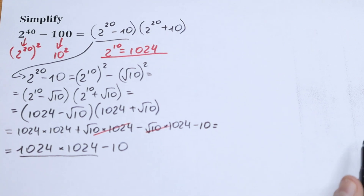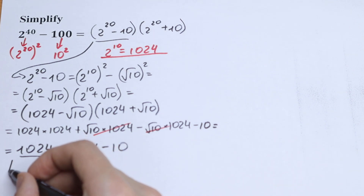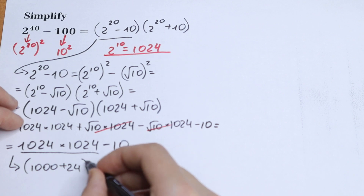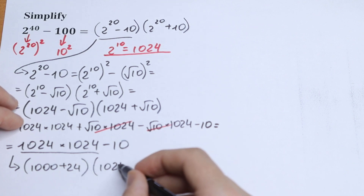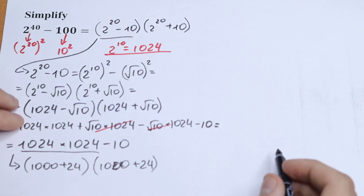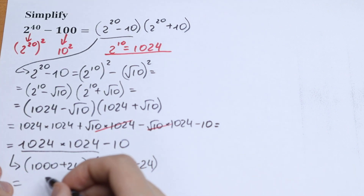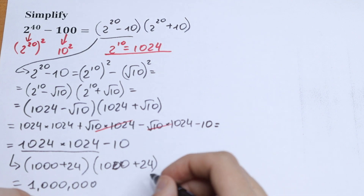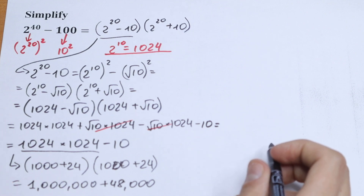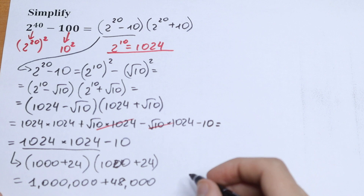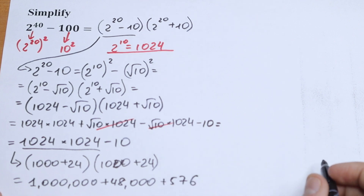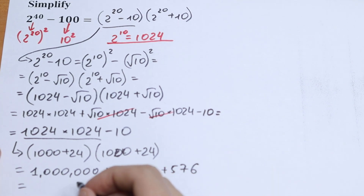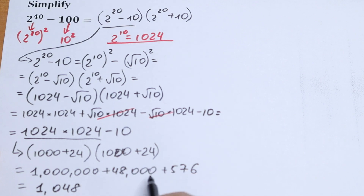Now let's compute 1024 times 1024. We write 1024 as 1000 plus 24, then multiply (1000 + 24)(1000 + 24). We get 1000 times 1000 = 1,000,000; then 24,000 plus 24,000 = 48,000; plus 24 times 24 = 576. So 1024 squared = 1,048,576. And our expression becomes 1,048,576 minus 10 = 1,048,566.